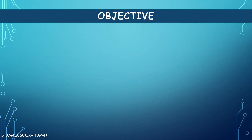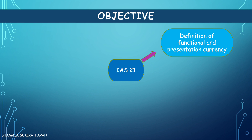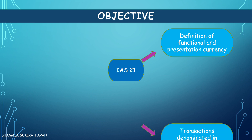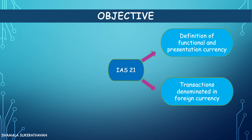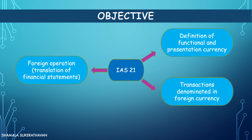Hence, IAS 21 sets out: 1. The definition of functional and presentation currency, including factors to be considered in determining the functional currency of an entity. 2. How to account for transactions denominated in a foreign currency. And 3. How to translate the financial statements of a foreign operation.